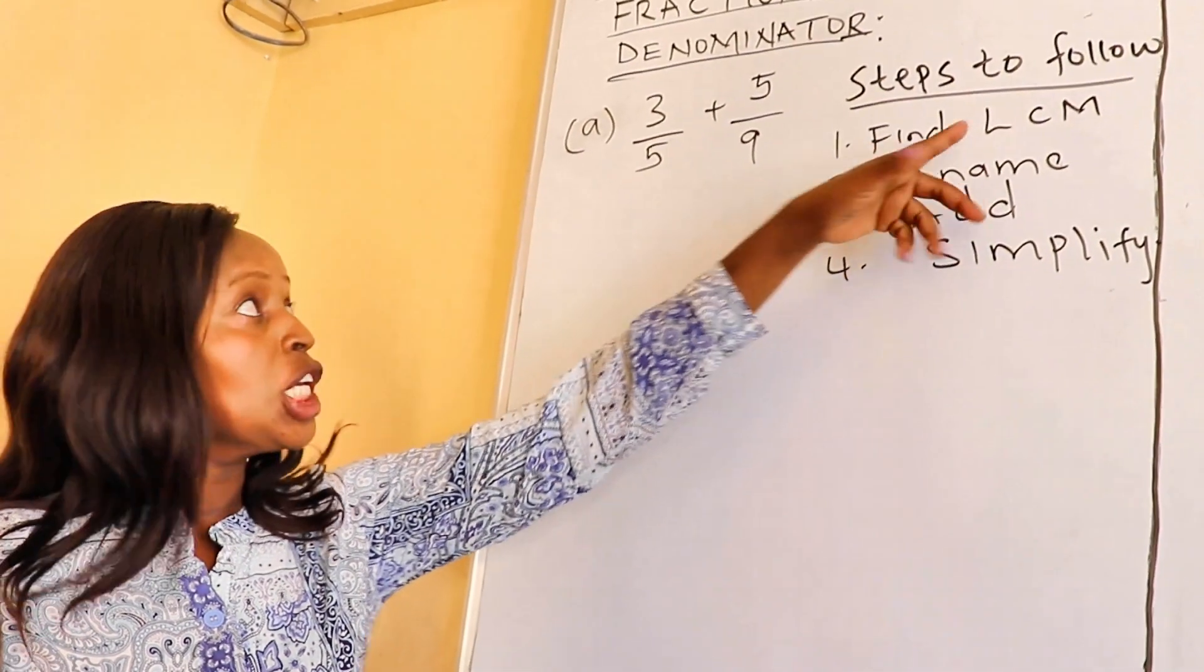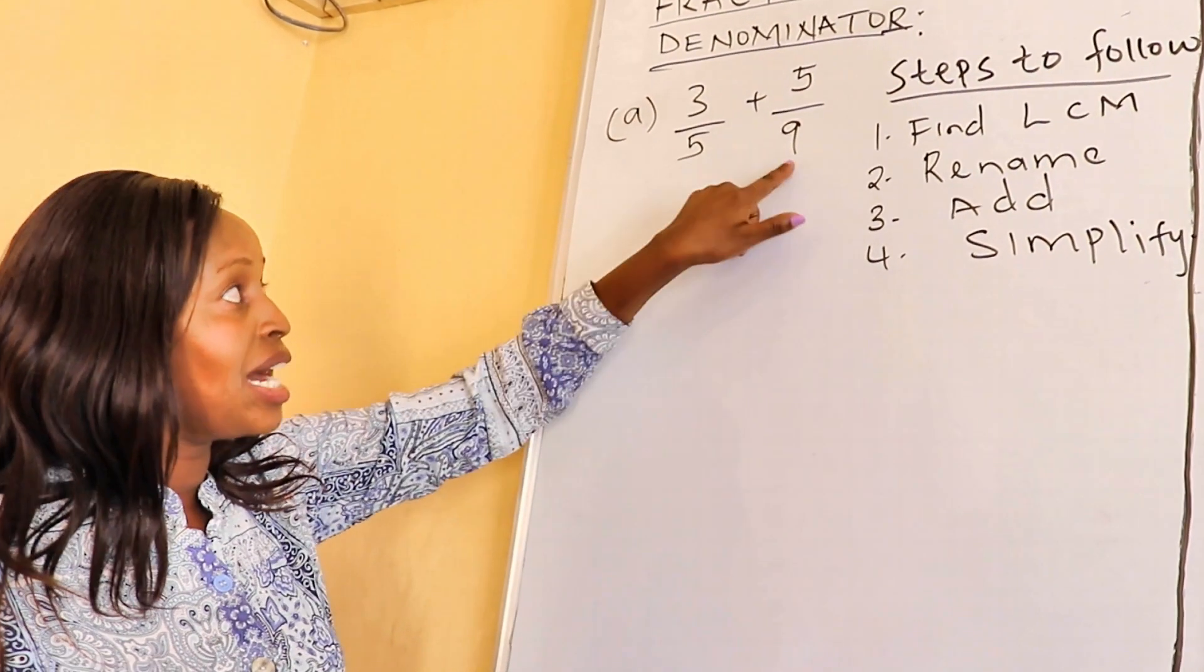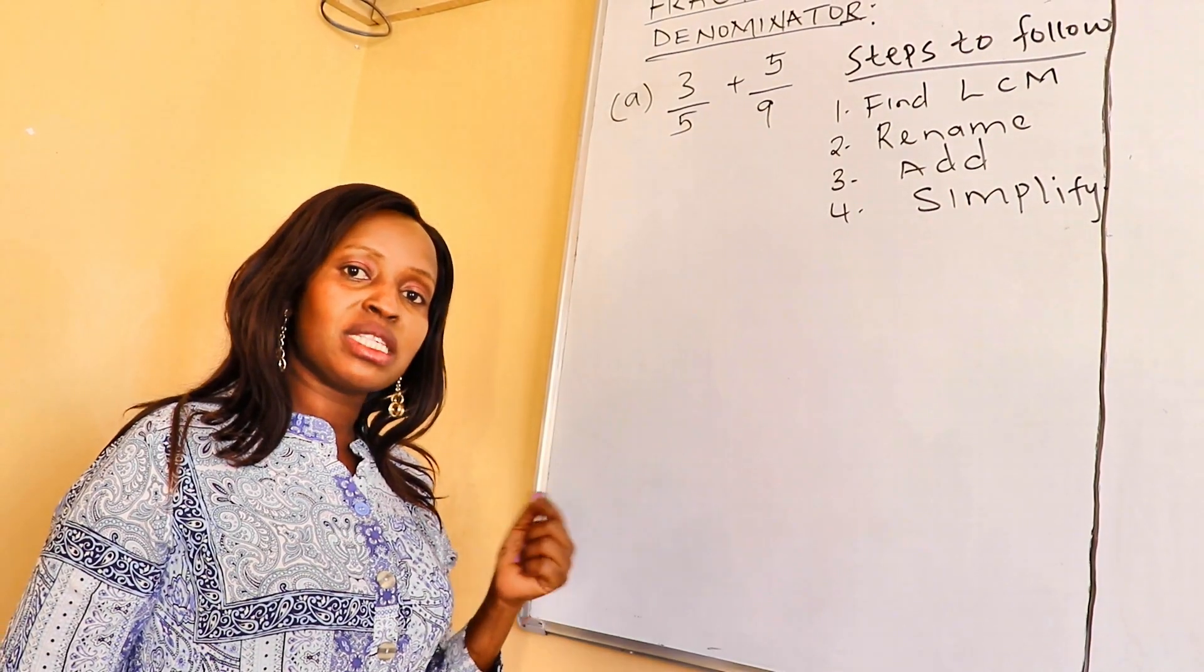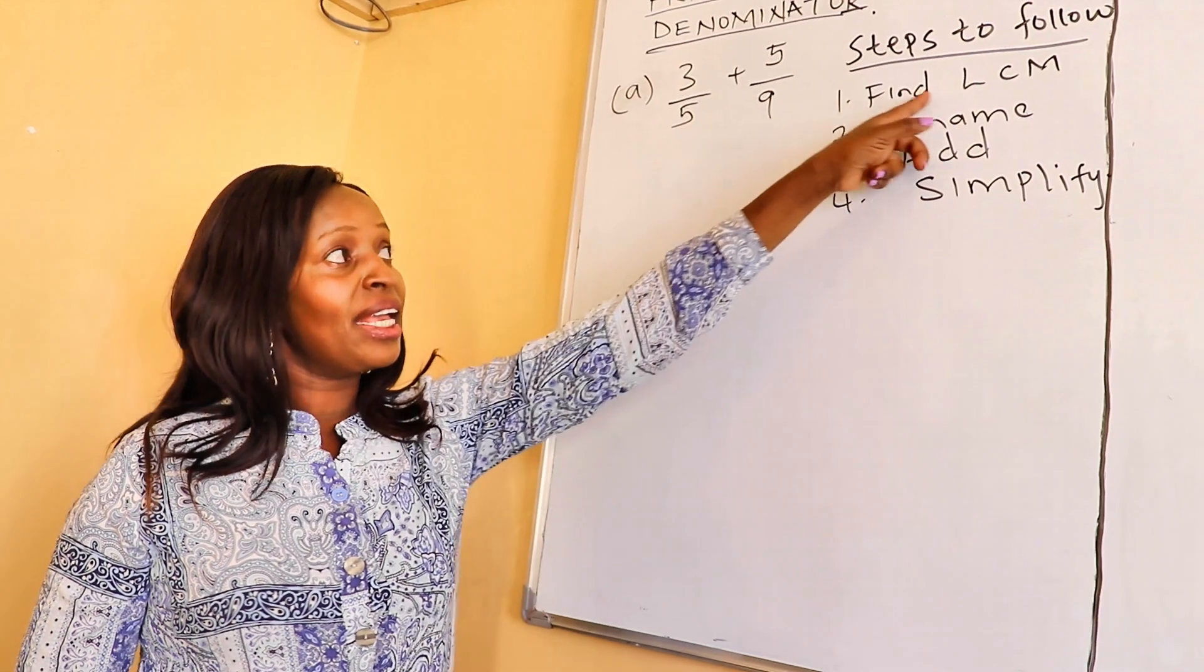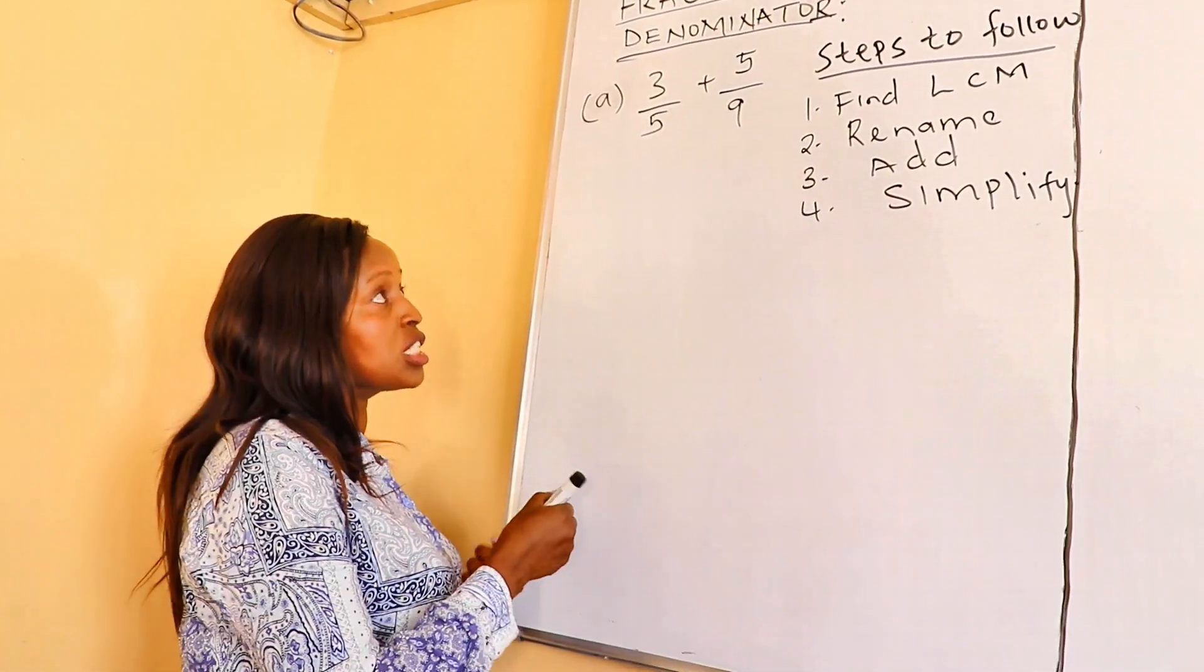If you look at these fractions, you realize that the denominators are different. Here, the denominator is 5 and here it's 9. Therefore, we need to express them under a common denominator. And that's why you need to apply LCM. So, step 1, let's get the LCM of these denominators.